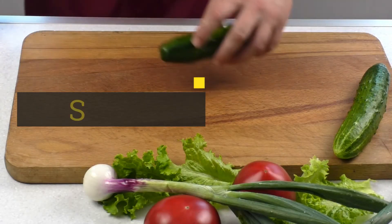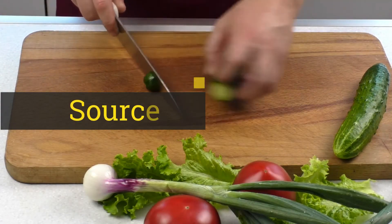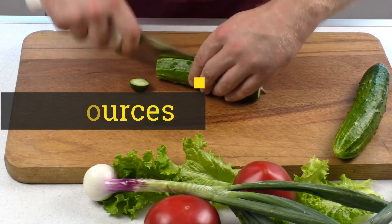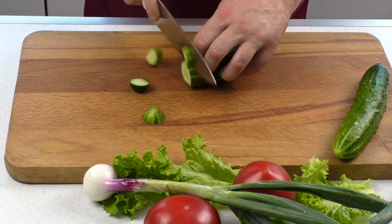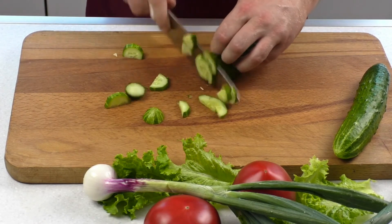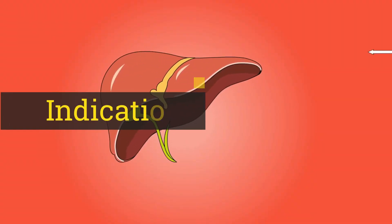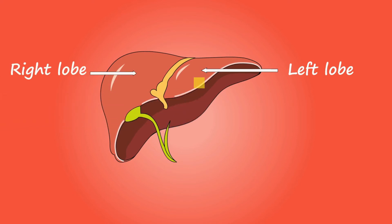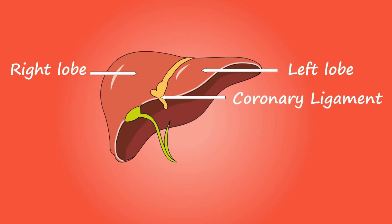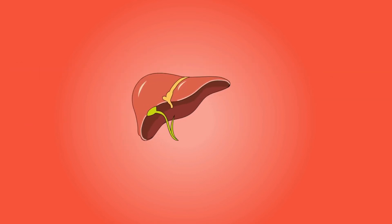Sources of Vitamin K include animal products, fish liver oil, leafy vegetables, and synthesis by bacterial flora in the colon. Indications include chronic liver disease, premature infants, deficiency-related liver disease, hematuria, and clotting factor deficiency.